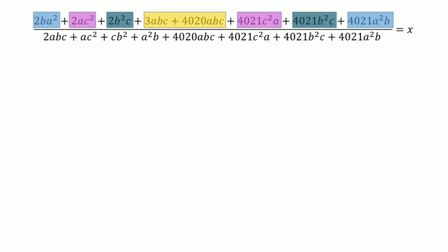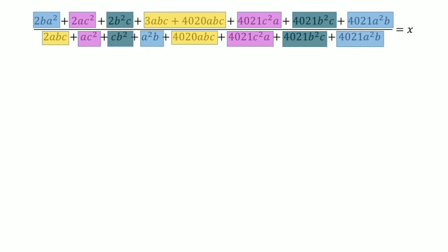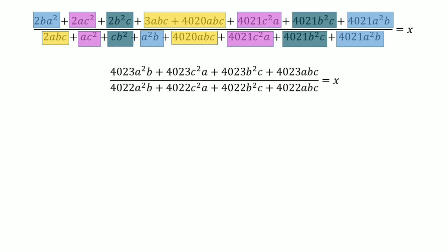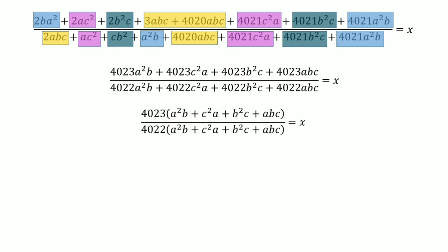In the denominator we have 2ABC plus 4020 ABC, A squared C plus 4021 C squared A, CB squared plus 4021 B squared C, and A squared B plus 4021 A squared B. After adding all of these, we take 4023 as common from the numerator and 4022 as common from the denominator. Since A squared B plus C squared A plus B squared C plus ABC appears as a common factor in both numerator and denominator, we can cancel it out. So X equals 4023 divided by 4022.